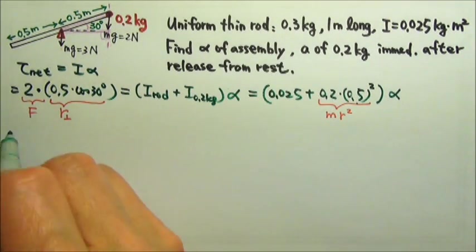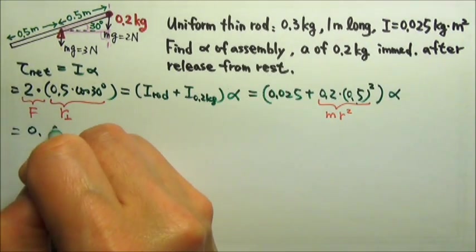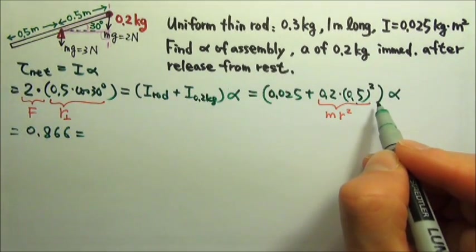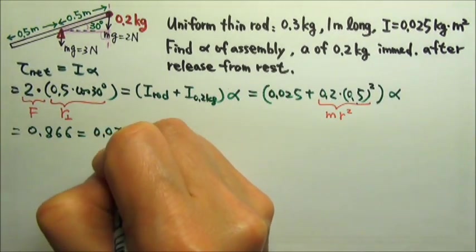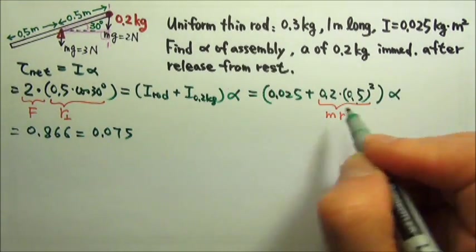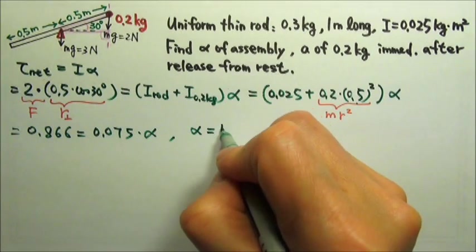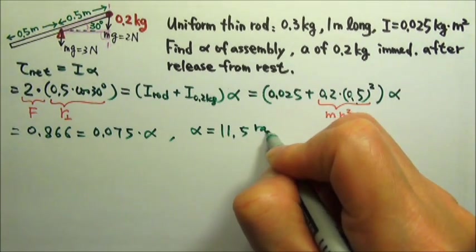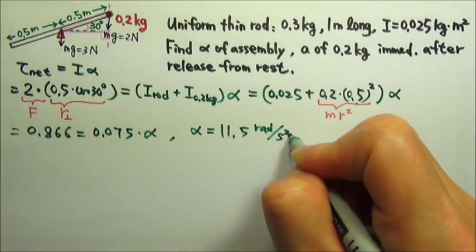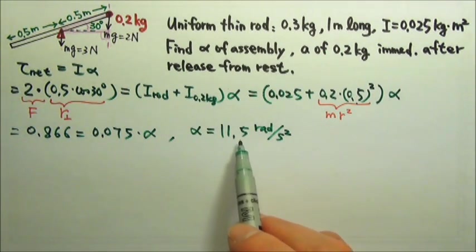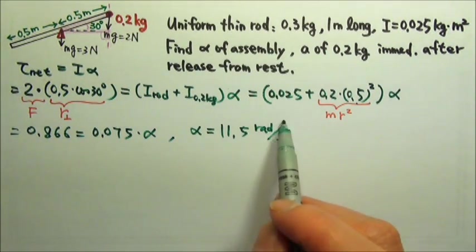For this we get 0.866, and if we add these two together, we get 0.075 times α. So we find α to be 11.5 radians per second squared. We're putting everything in standard units, so when we find α, it should also be in standard units.